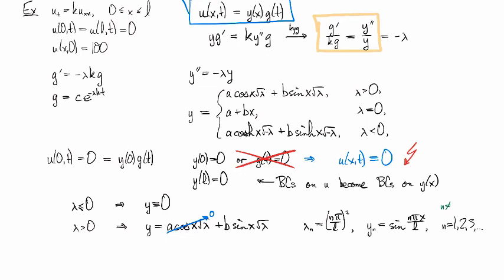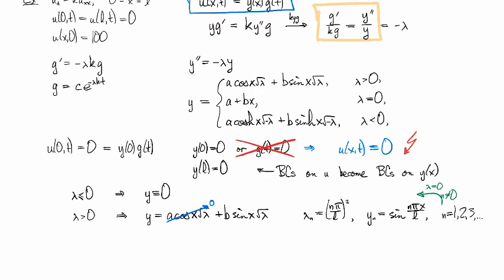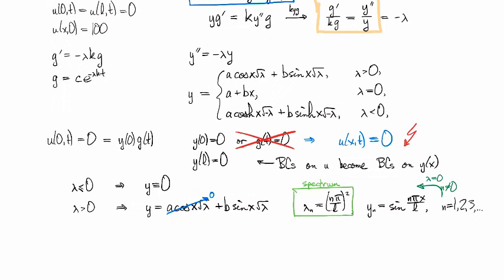Note that we don't take n equal zero because that puts us back in the case for where lambda is equal to zero. And that didn't give us any solutions. So the spectrum here includes just these numbers right here. So this is the spectrum, the set of eigenvalues for this particular problem.